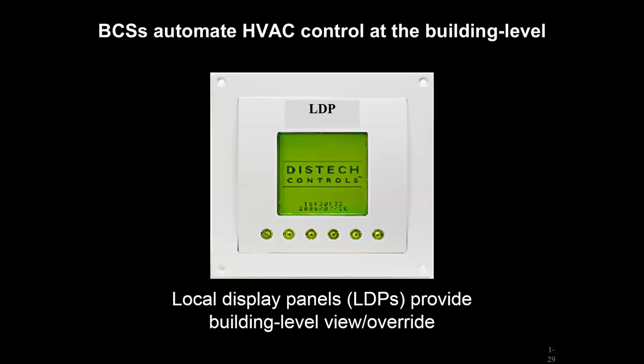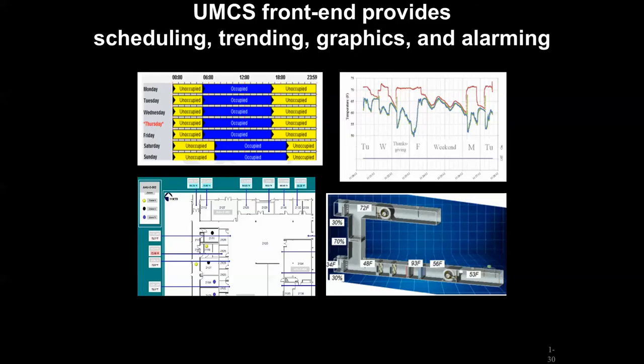Ideally we want to have some local interface or display panel that allows for limited viewing and overriding of specific key parameters. But for enhanced interface, we need something like a UMCS front end. This can be installed locally at a building, but ideally it's overseeing a number of buildings in a campus environment.